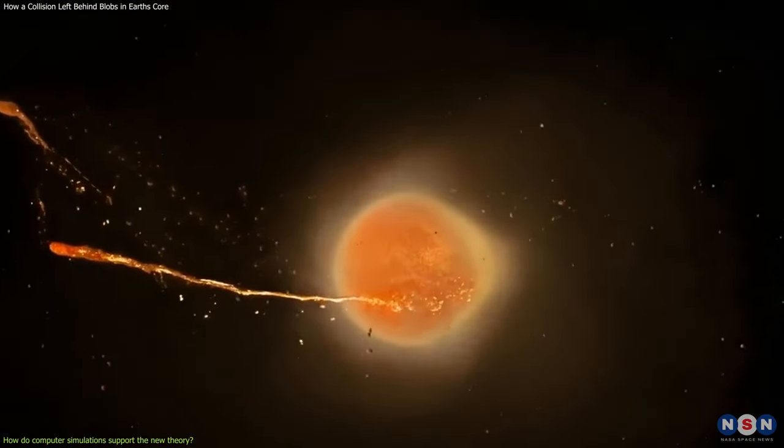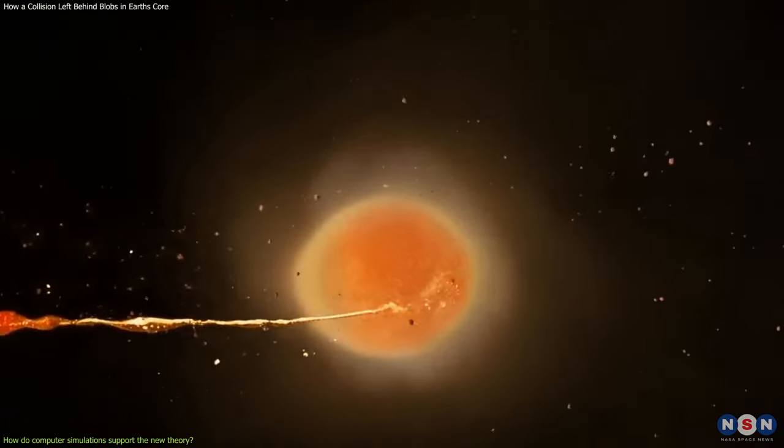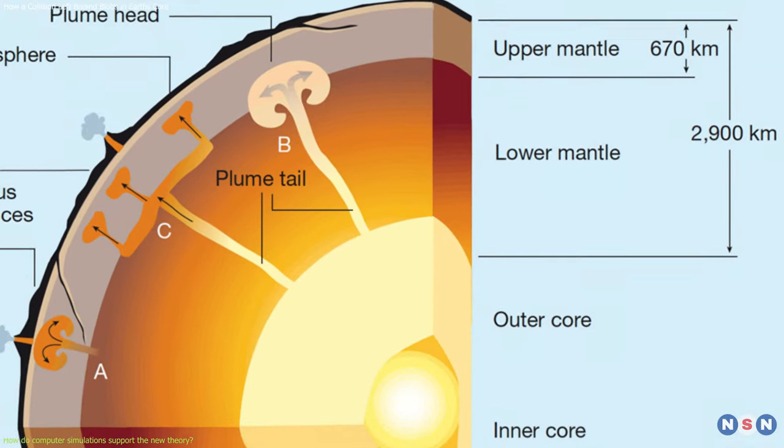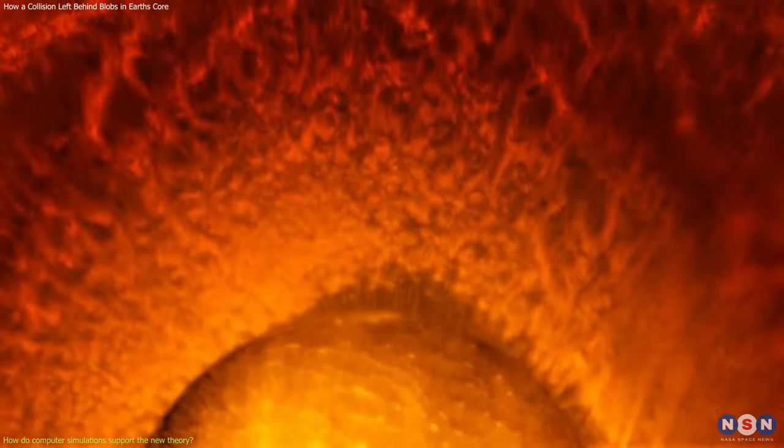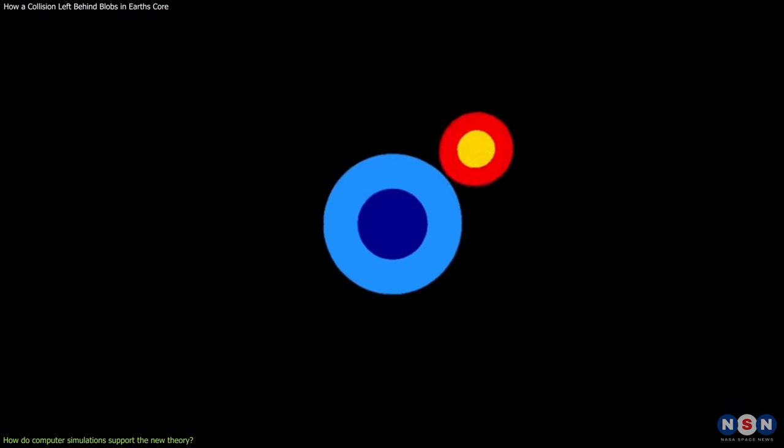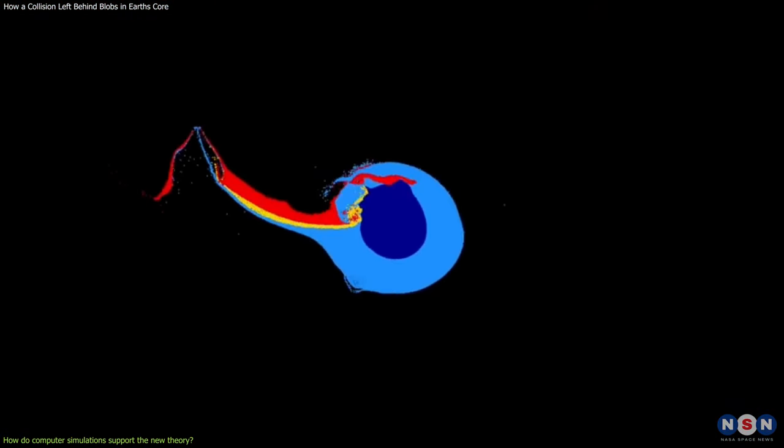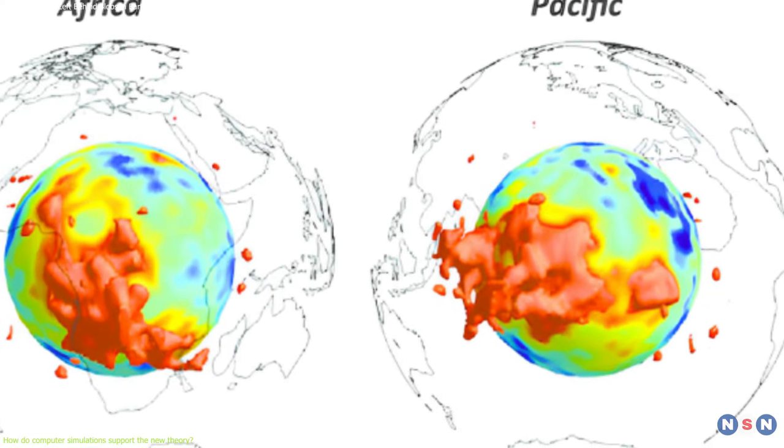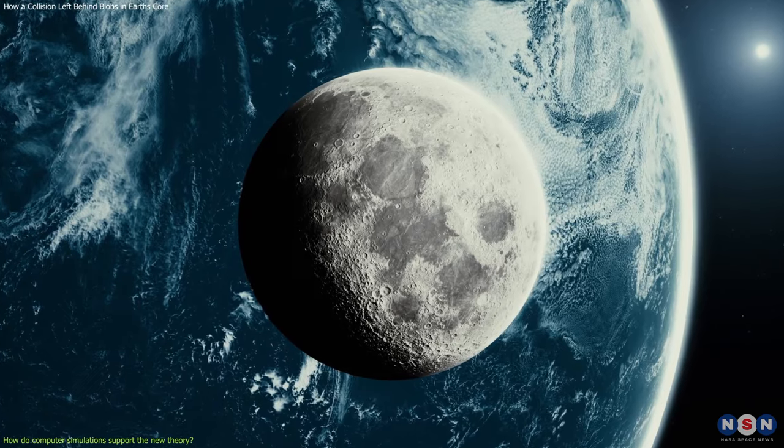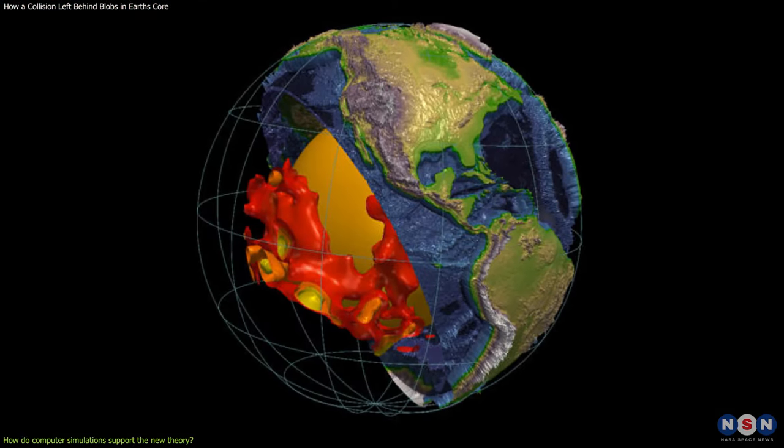They also showed that the material that fell back to Earth could remain stable and isolated in the lowermost mantle for billions of years, without mixing with or dissolving with the surrounding mantle. Therefore, these simulations provide strong evidence for the new theory that the LLVPs are remnants of Theia, and that the collision that formed the moon could also create the blobs in Earth's core.